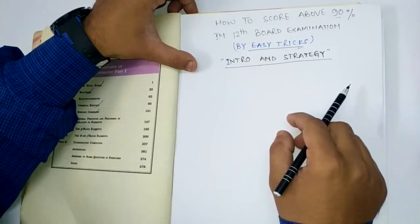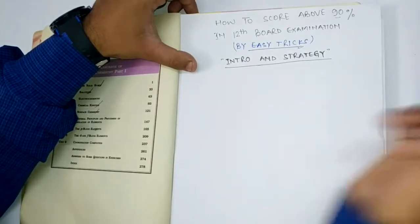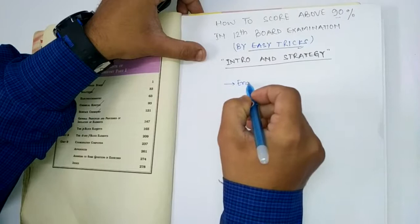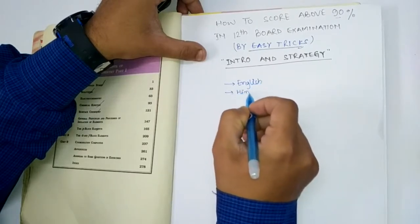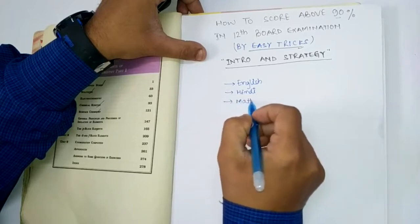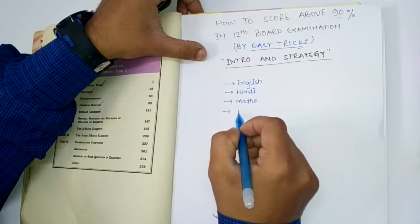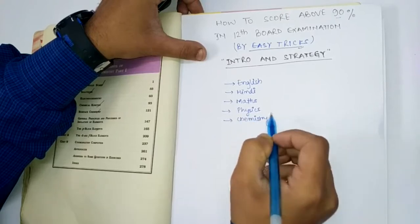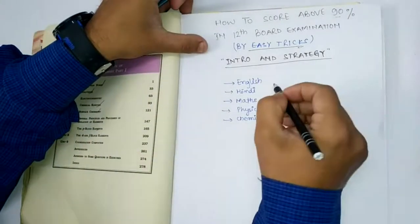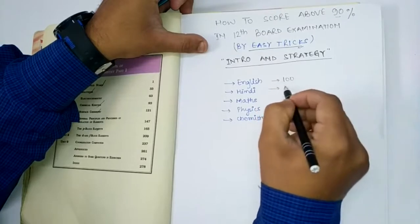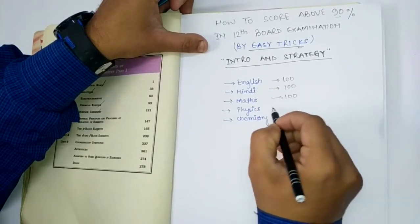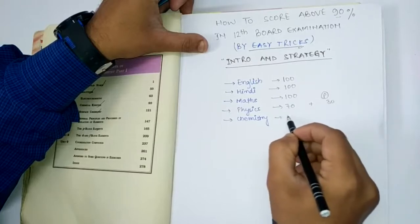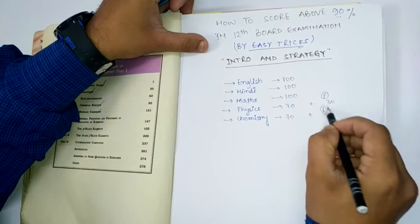I'm going to tell you the weightage of each subject and how much you have to score. A 12th student basically opts five subjects: English, Hindi, Maths, Physics, and Chemistry. English has a weightage of 100 marks, Hindi 100 marks, Maths 100 marks. Physics has 70 marks as the theoretical portion plus 30 as practical, and Chemistry has 70 marks as the theoretical portion plus 30 as practical.